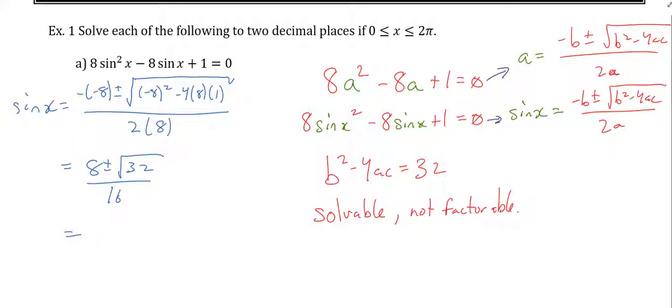And the nice thing about, again, using b² - 4ac to check if it's factorable or not, is if you end up using the quadratic formula, half of it's already done for us, right? Then we just go straight to 8 ± √32 over 16. Okay? You could move on to the whole next step of the question here. You are not required. Yes, go ahead.